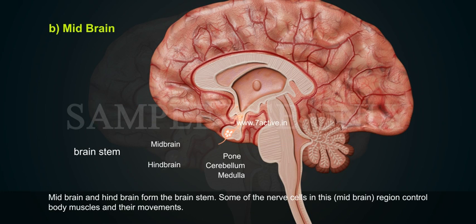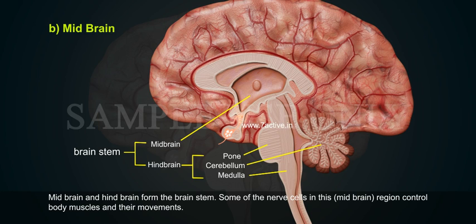Midbrain and hindbrain form the brain stem. Some of the nerve cells in this midbrain region control body muscles and their movements.